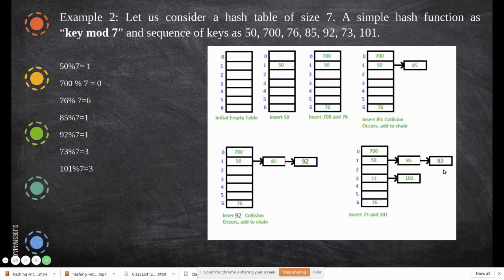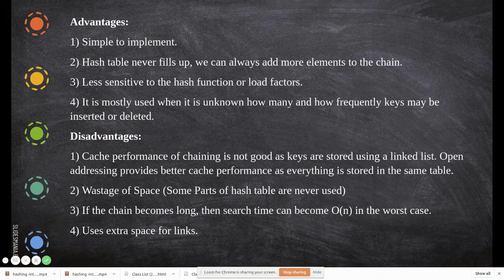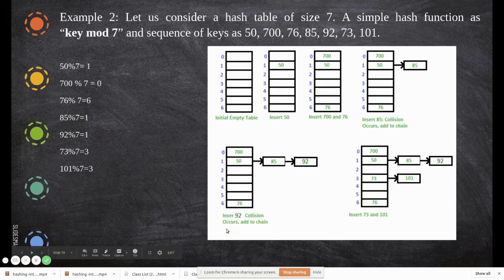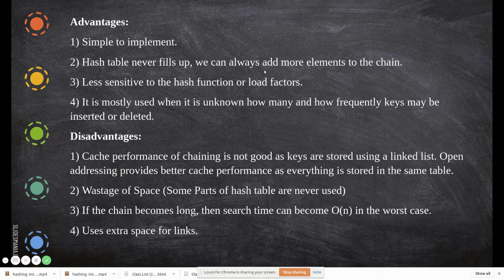This is a better way of handling collision, but it has its own disadvantage: using pointers means more space is needed for storing pointer values. The advantage is it is simple to implement, and the hash table never fills up. If you keep on increasing the linked list, there is no problem. Even if you have only seven slots from zero to six, it never fills up because you fill sideways using the linked list. You can keep on increasing - that is the main point. The hash table never fills up; we can always add more elements to the chain.